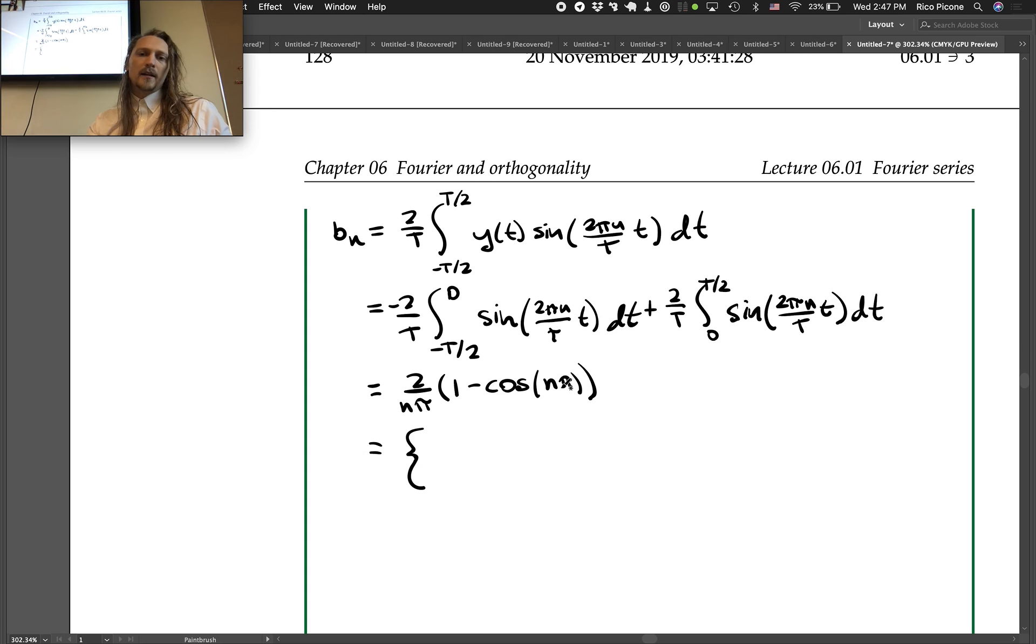So, what happens here? When n here is even, so n is 2 and n is 4, it's cosine of 2 pi, which is 1, cosine of 4 pi, which is 1, so 1 minus 1 is 0 and you end up with 0 for your bn. So 0 for n even and 4 over n pi for n odd.